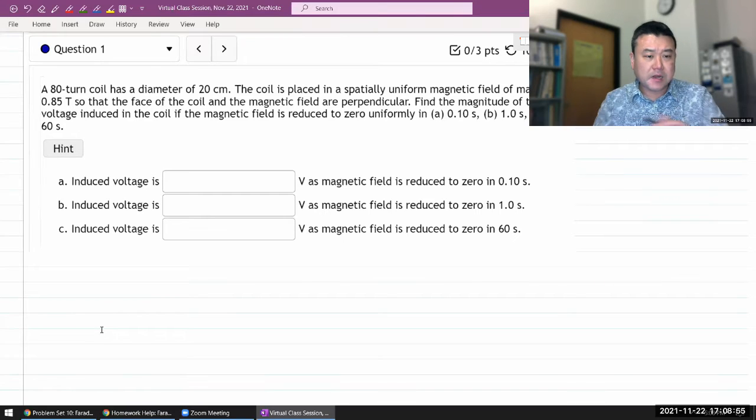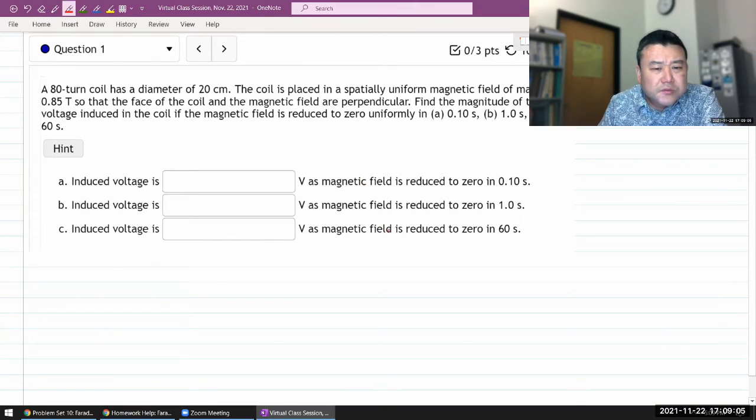So, okay, let me get started with question one. It says an 80-turn coil has a diameter of some centimeter. Let me draw this.